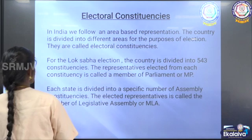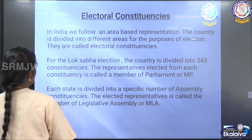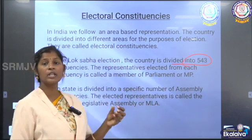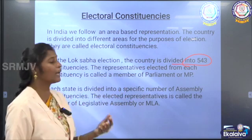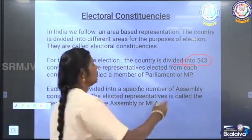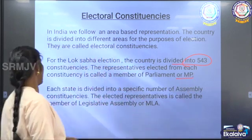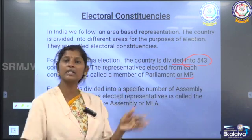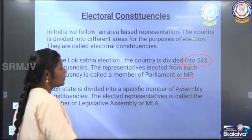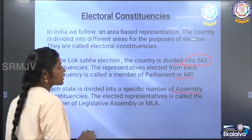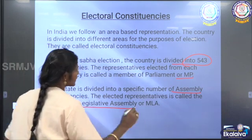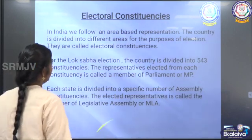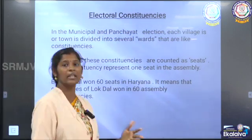For the Lok Sabha election, the country is divided into 543 constituencies, and the representative from each constituency is called the Member of Parliament, or MP. For the state assembly election, the state is divided into a number of state assembly constituencies, and the elected representative is called the Member of Legislative Assembly, or MLA. Similarly, we have the municipal and panchayat elections.